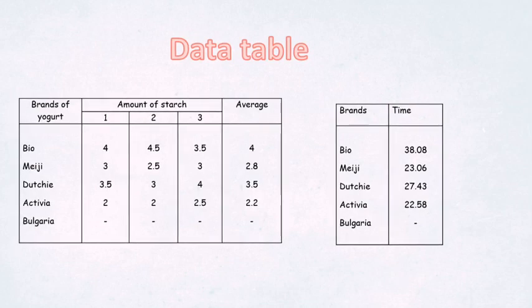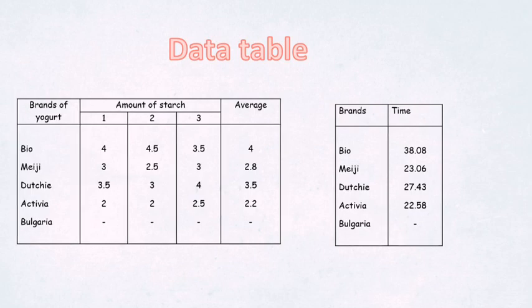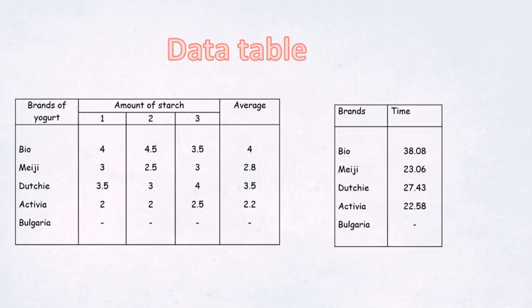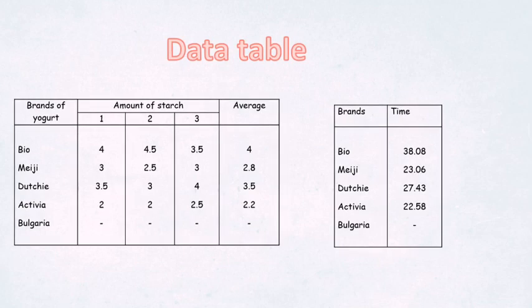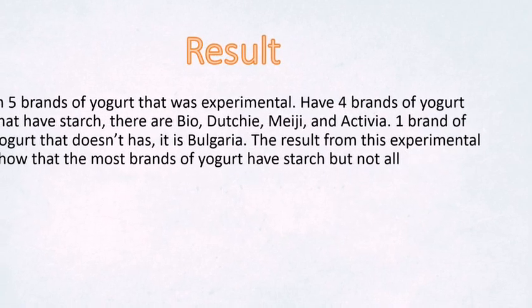After putting the sulfuric acid and recording the time in seconds: Bio is 38.08, Meiji is 23.04, Dachi is 27.40, Activia is 22.58.